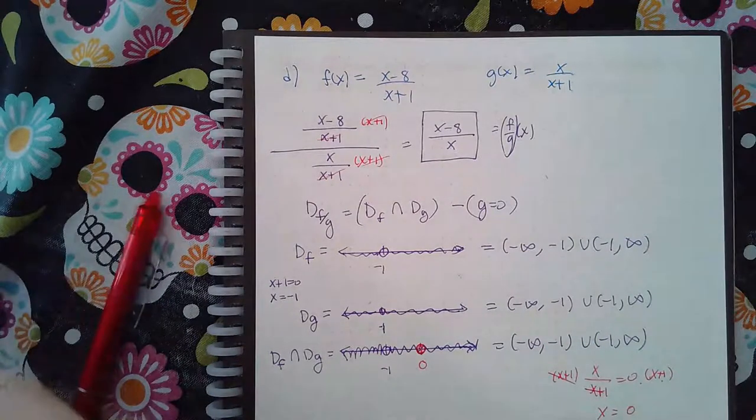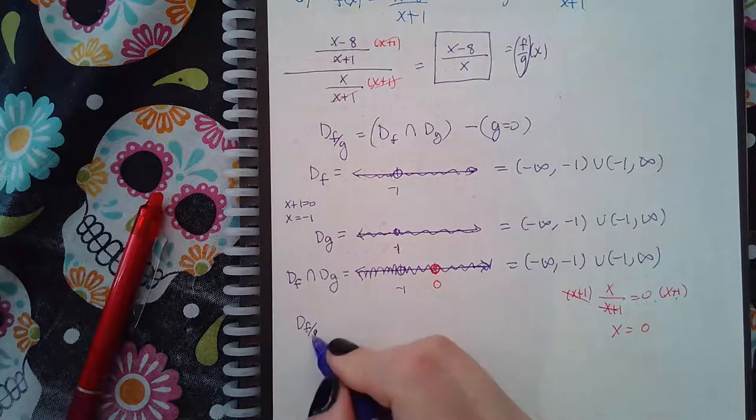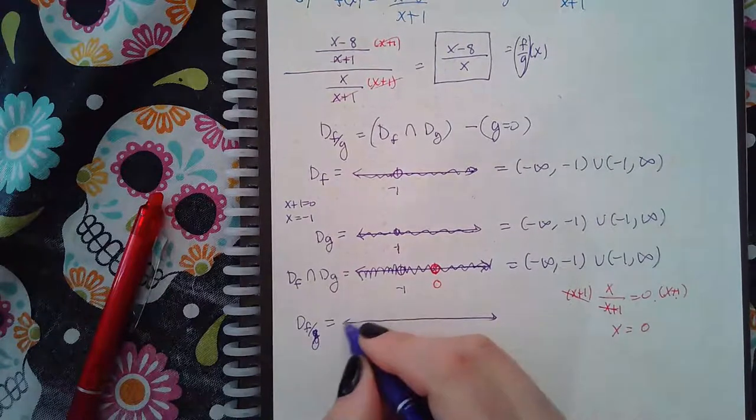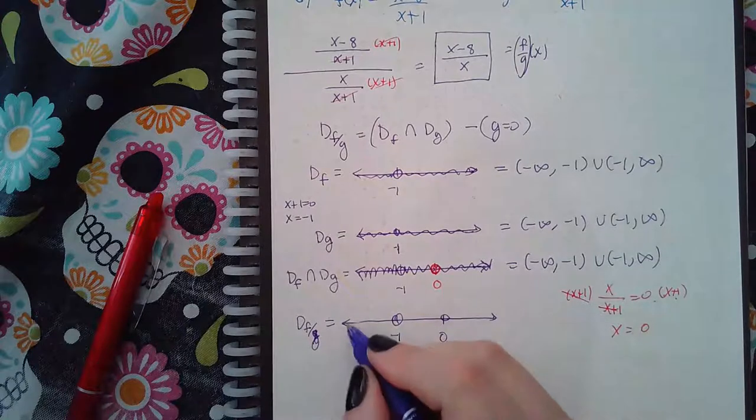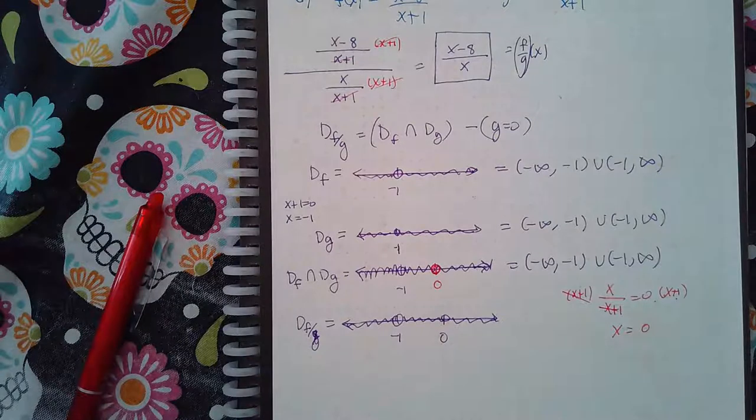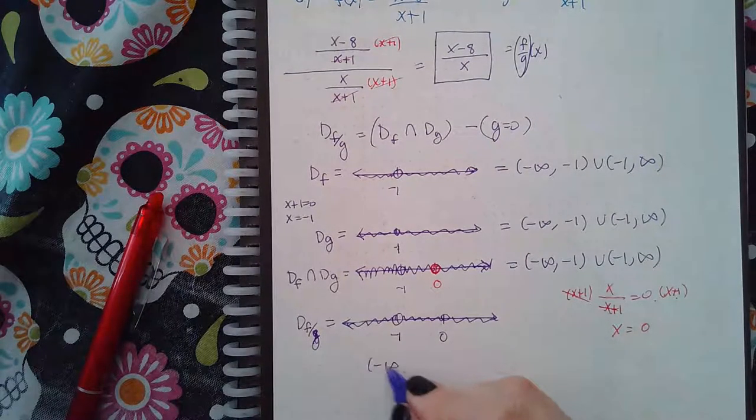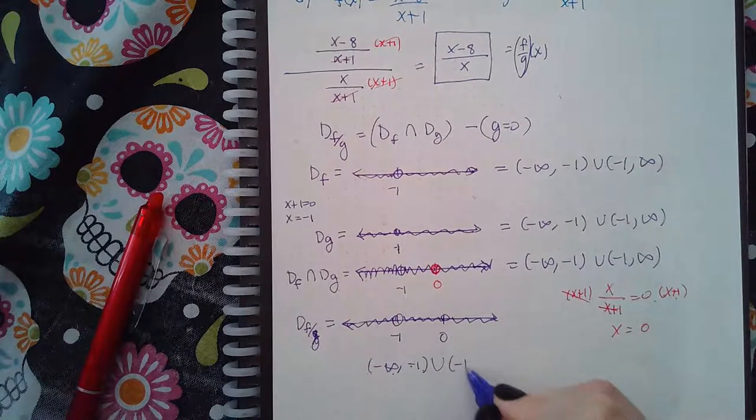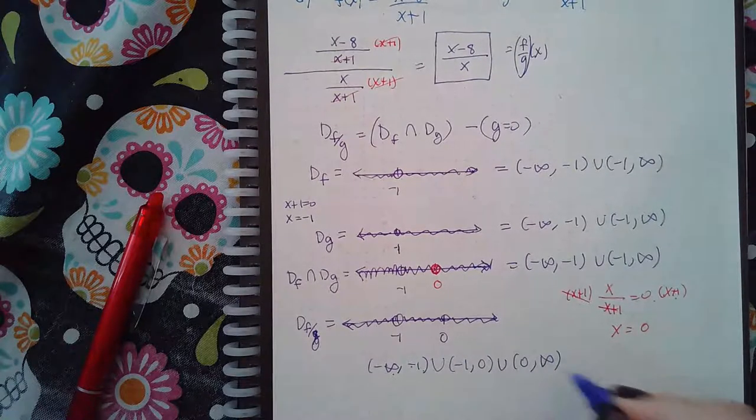So that means the domain of f over g is the number line with a hole here and a hole here, with everything on the left shaded, everything in the middle shaded, and everything to the right shaded. In interval notation, it's from negative infinity to negative 1, negative 1 to 0, and then 0 to infinity. This is the domain in interval notation.